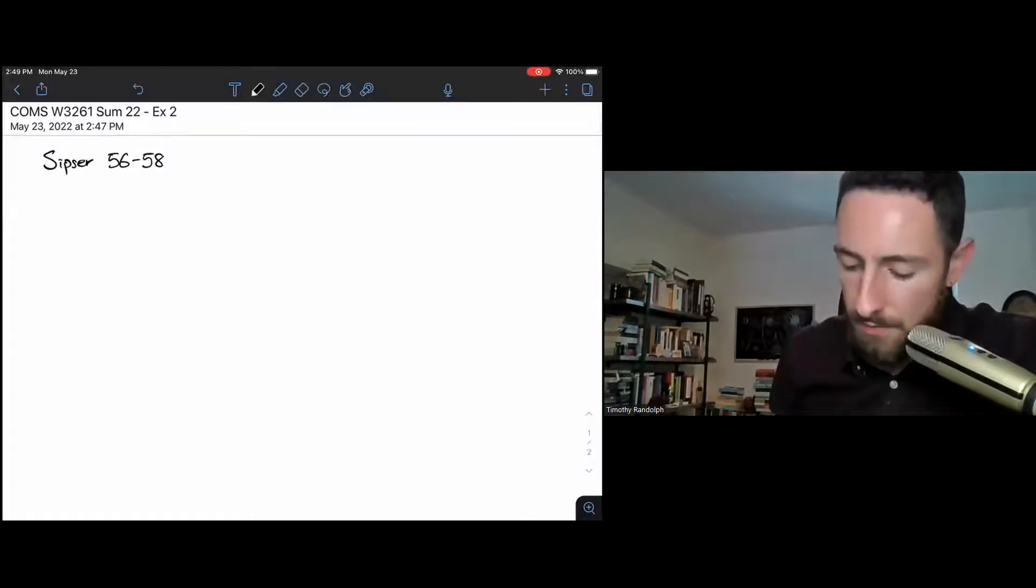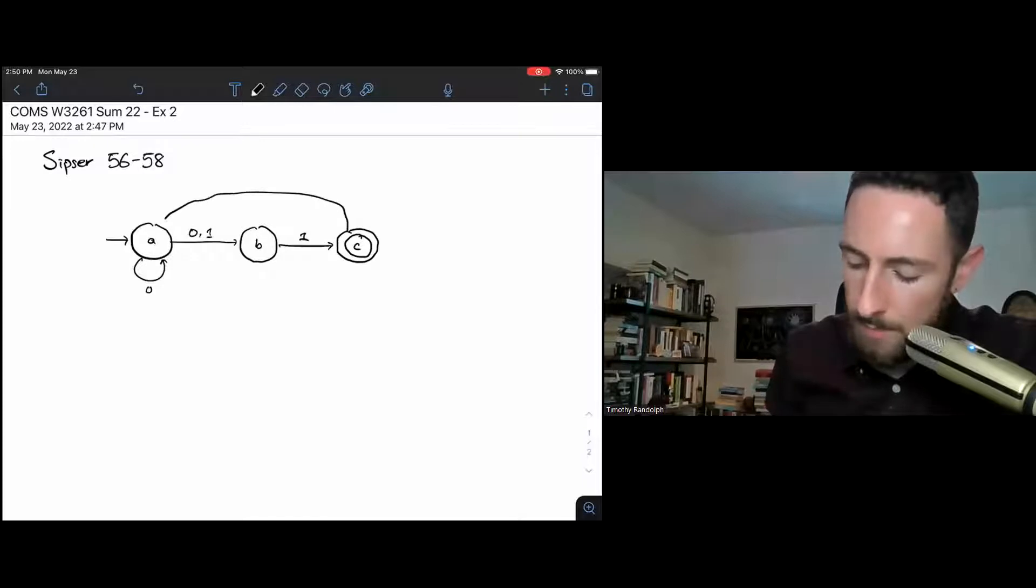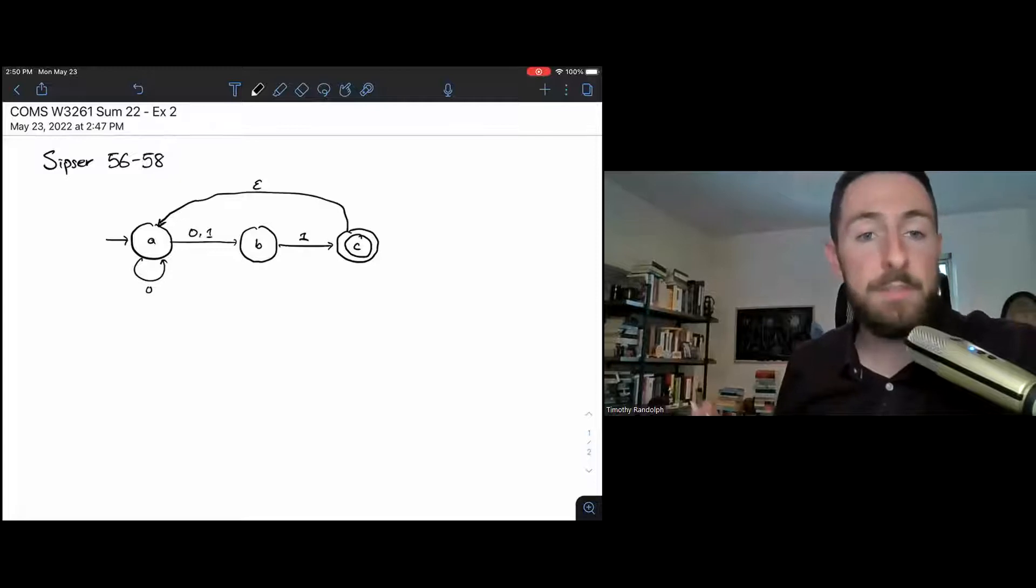So let me just draw an NFA for us here. I've got a start state which I'll call A. My alphabet will be 0, 1. On a 0, I'll both stay in A and I'll move over to the next state B. I'll also move over to B on a 1. On a 1 and only on a 1, I'll move over to a third state that'll be an accept state that I'll call C. And because we want an example of an epsilon transition, I'll make an epsilon transition back from C to A.